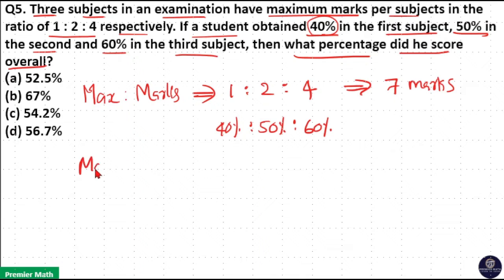Marks scored by the student: He scored 40%, which means 40 into 1 (maximum mark is 1), so 40 by 100.